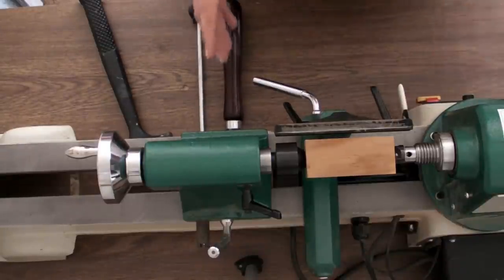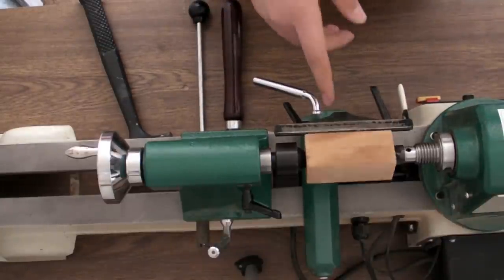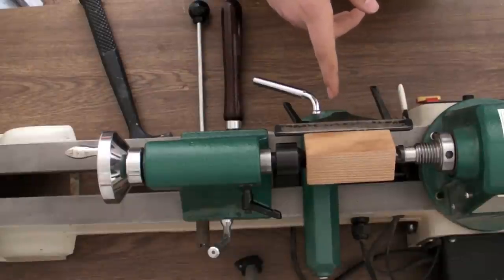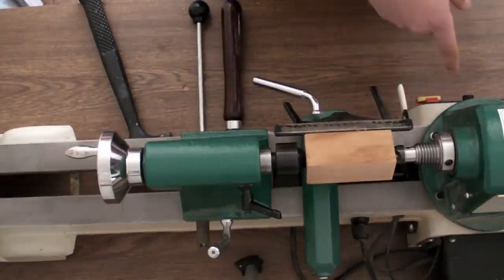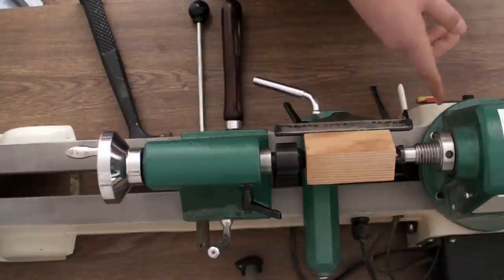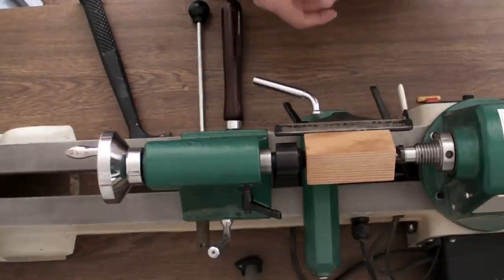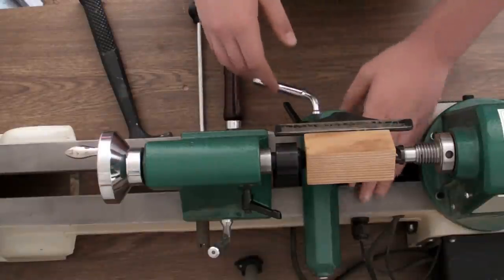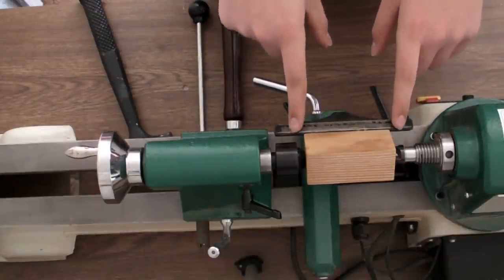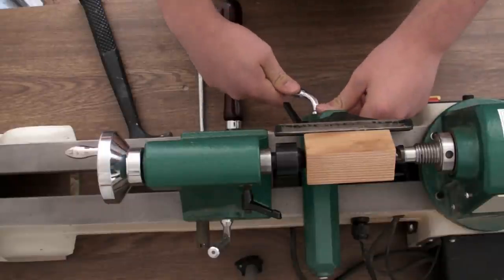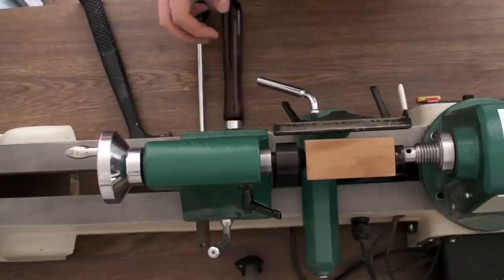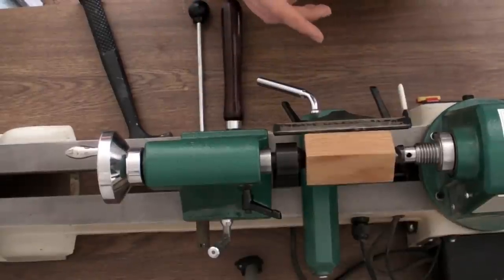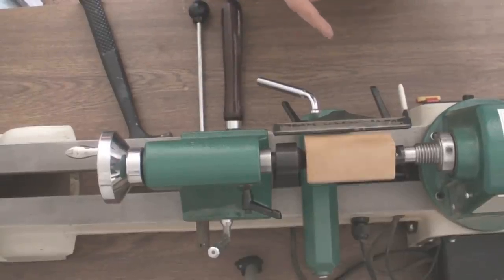Remember, before you even turn on your lathe, you always spin it by hand, for exactly this reason. If it hits, and your lathe power is turned on, and you're not turning it by hand, it can damage your motor, and cause you to either buy a new lathe, or have to buy a new motor. So since this hits, all we do is we don't move the tool rest, we just move the banjo out a little tiny bit, so it will clear. See how I can spin this freely? That's exactly what you want.